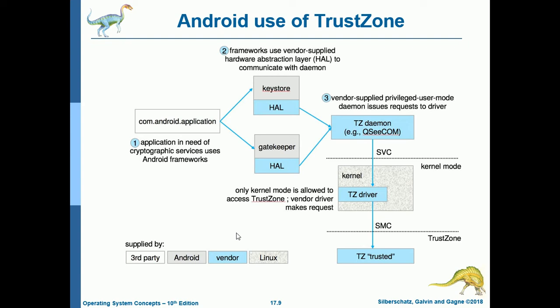If a problem arises from an unsigned application, it will make your system vulnerable to attacks — that's why this mechanism exists. But it's your own risk to allow installation from unknown sources.